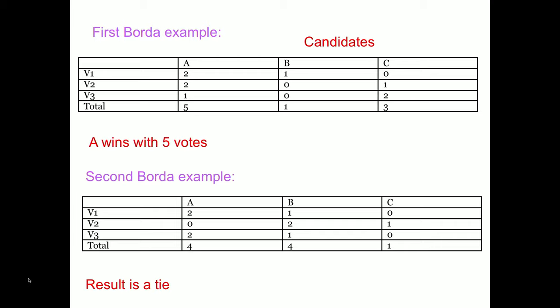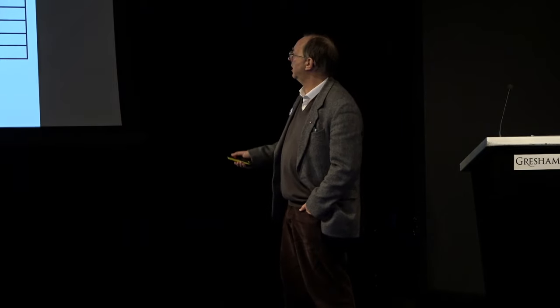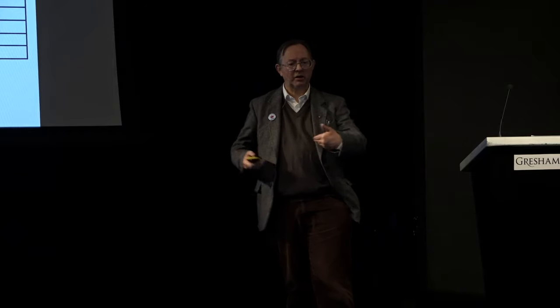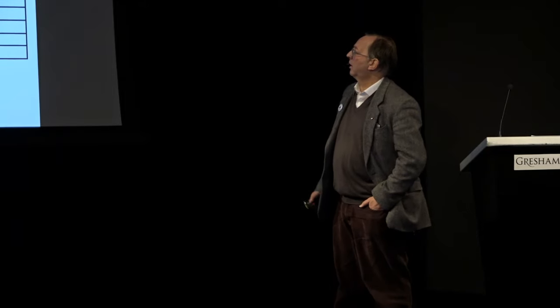In a second example, A came top for voter 1 and voter 3, but voter 2 really didn't like them. Candidate B is more of a compromise. A and B both end up with four votes, and C has one vote — a tie. At Bath, in this case we'd eliminate C and redo the vote to reach a decision.